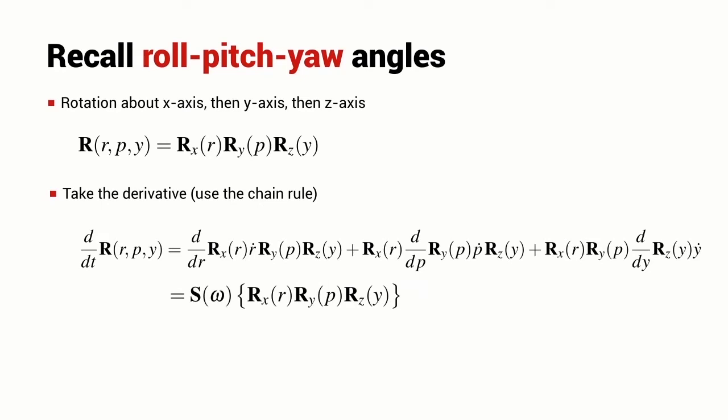We also know that the time derivative of a rotation matrix can be expressed in terms of a skew symmetric matrix, which is a function of angular velocity and the rotation matrix itself. I can rearrange this rather complex expression and solve for the skew symmetric matrix S, and then I can equate the finite elements of S between the left and right hand side of my equation.